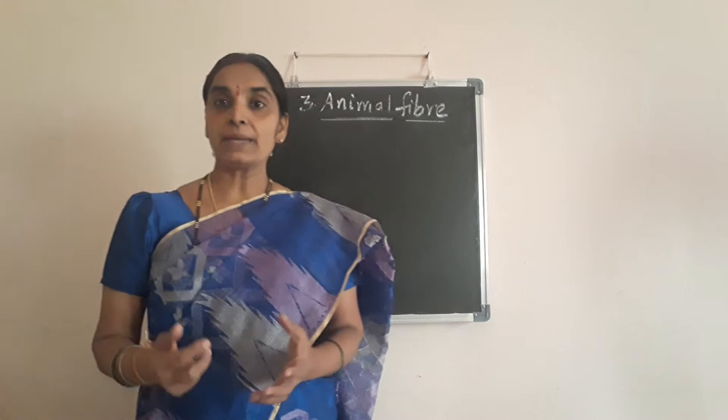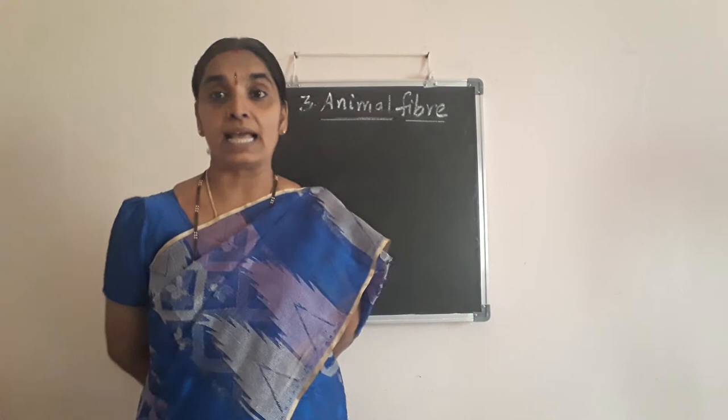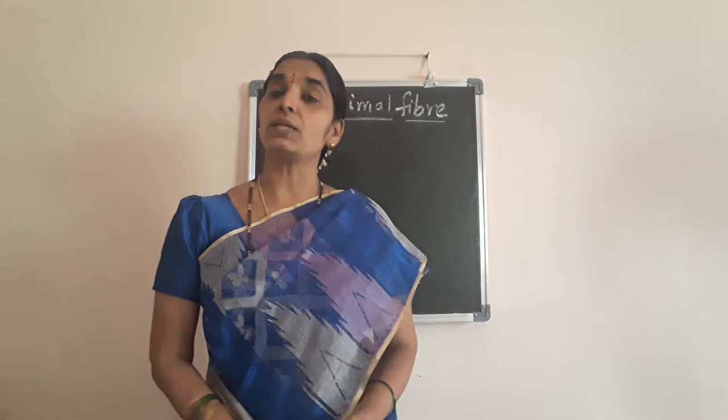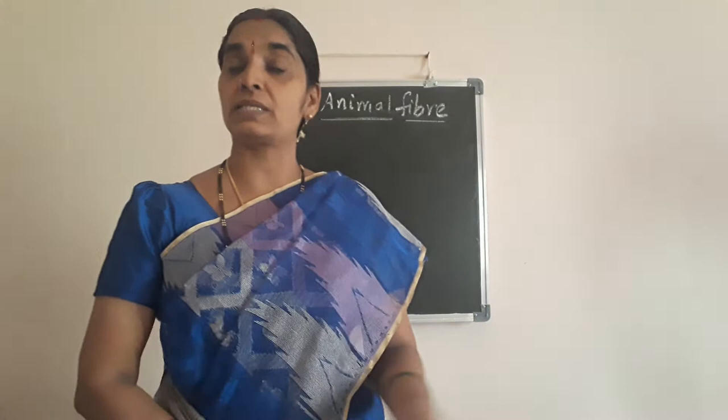There are two types of fibers. First, what are fibers? Fibers are the tiny strand-like structures called fibers. The two types are natural fibers and artificial fibers. Natural fibers are those we get from plants or animals. The fibers we get from plants are cotton, jute, aloe vera fiber, and coconut fiber.